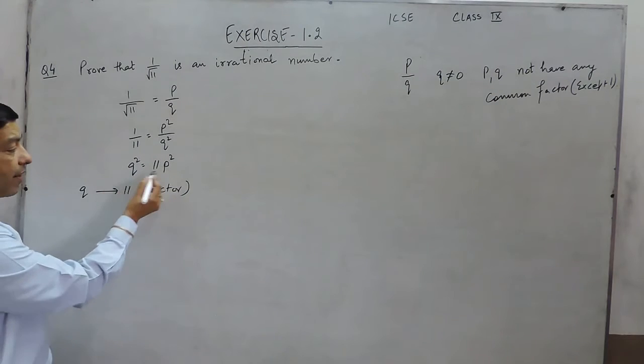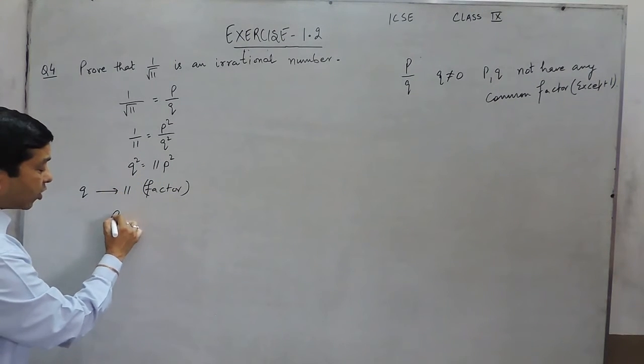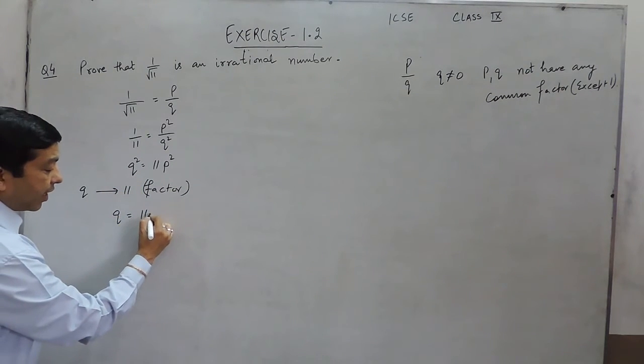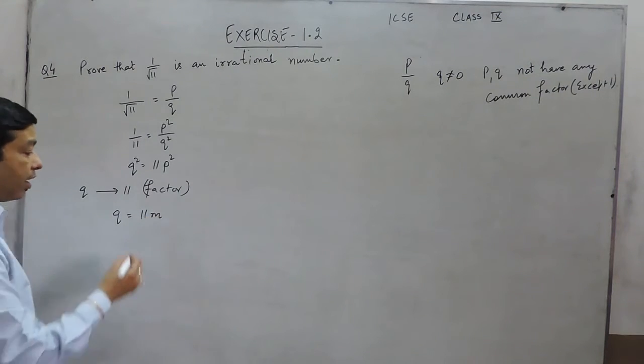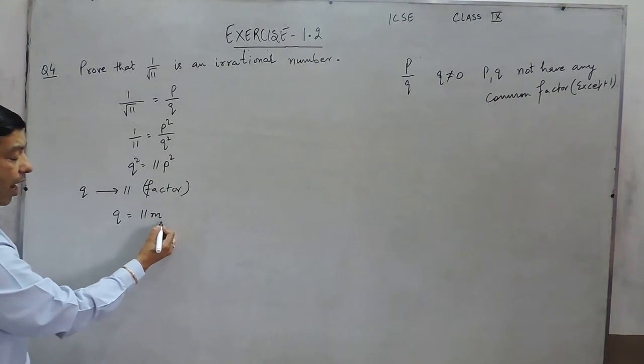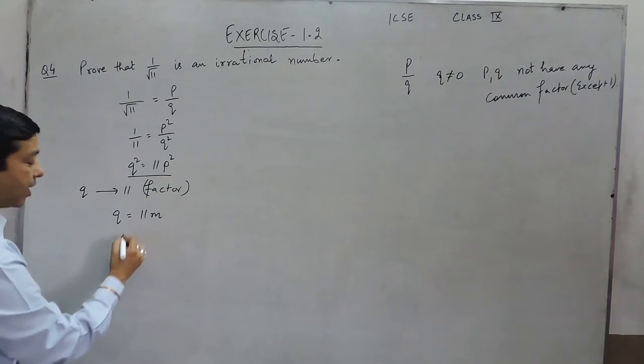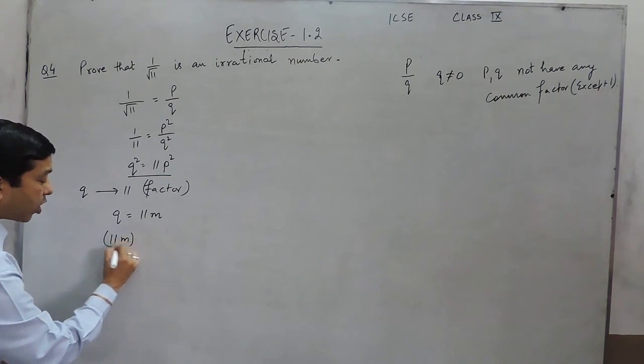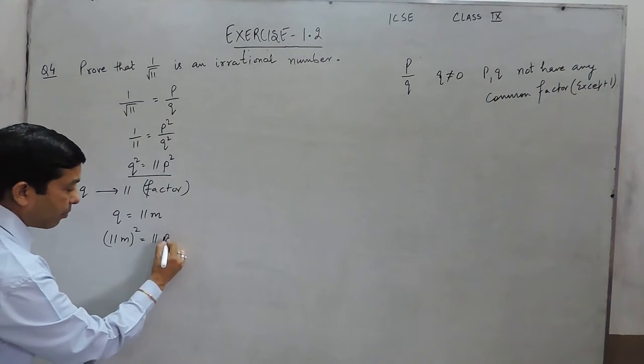Now, when 11 is one factor of Q, we can assume Q as 11M. When we put the value of Q as 11M in this equation, it will become 11M whole square is equal to 11P square.